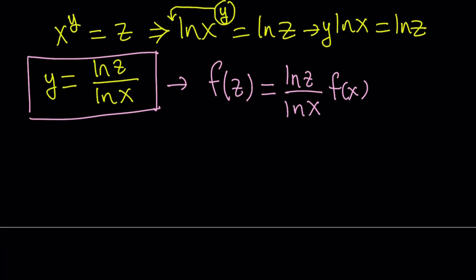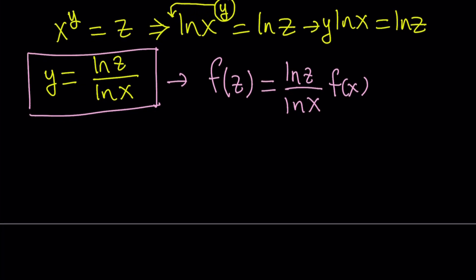Here's what I'm going to do. I would like to get an expression for f of x. So I think it makes sense if I isolated f of x. Let's go ahead and isolate f of x here and write this as f of z times ln x divided by ln z.